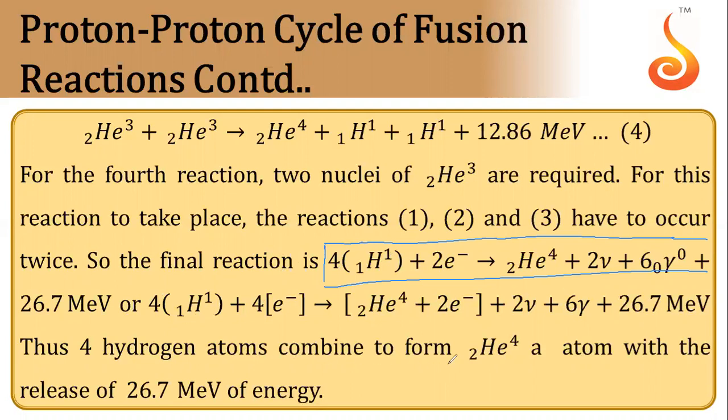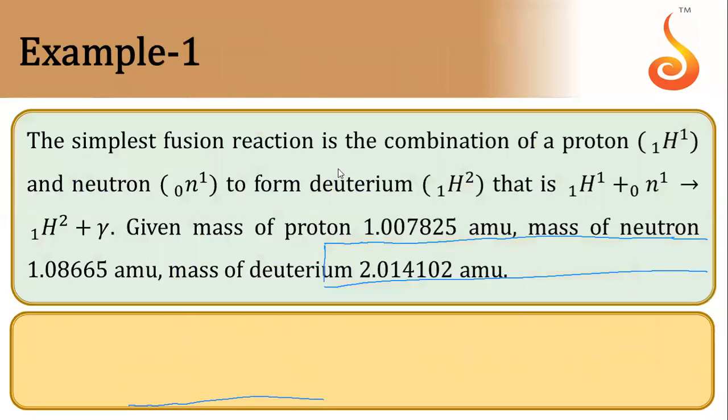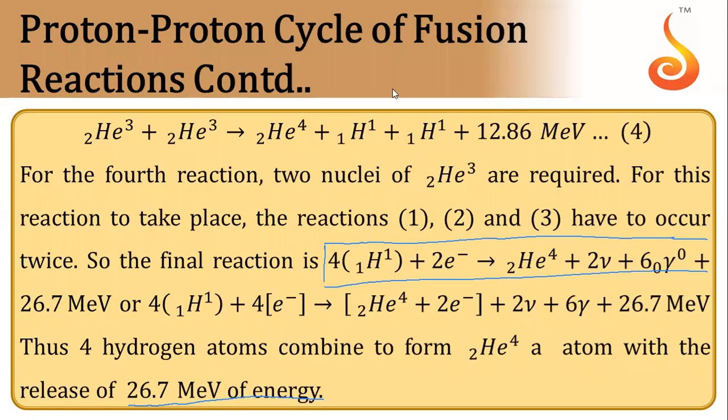Thus, four hydrogen atoms combine to form a helium nuclei and it releases 26.7 MeV of energy. So this is your proton-proton cycle which happens in the sun.